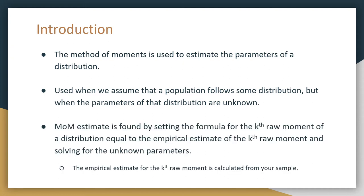Method of moments is often shortened to MOM, and this estimate is found by setting the formula of the kth raw moment of the distribution equal to the empirical estimate of the kth raw moment, and then solving for the unknown parameters. To clarify, the empirical estimate for the kth raw moment is calculated from a sample that is drawn.